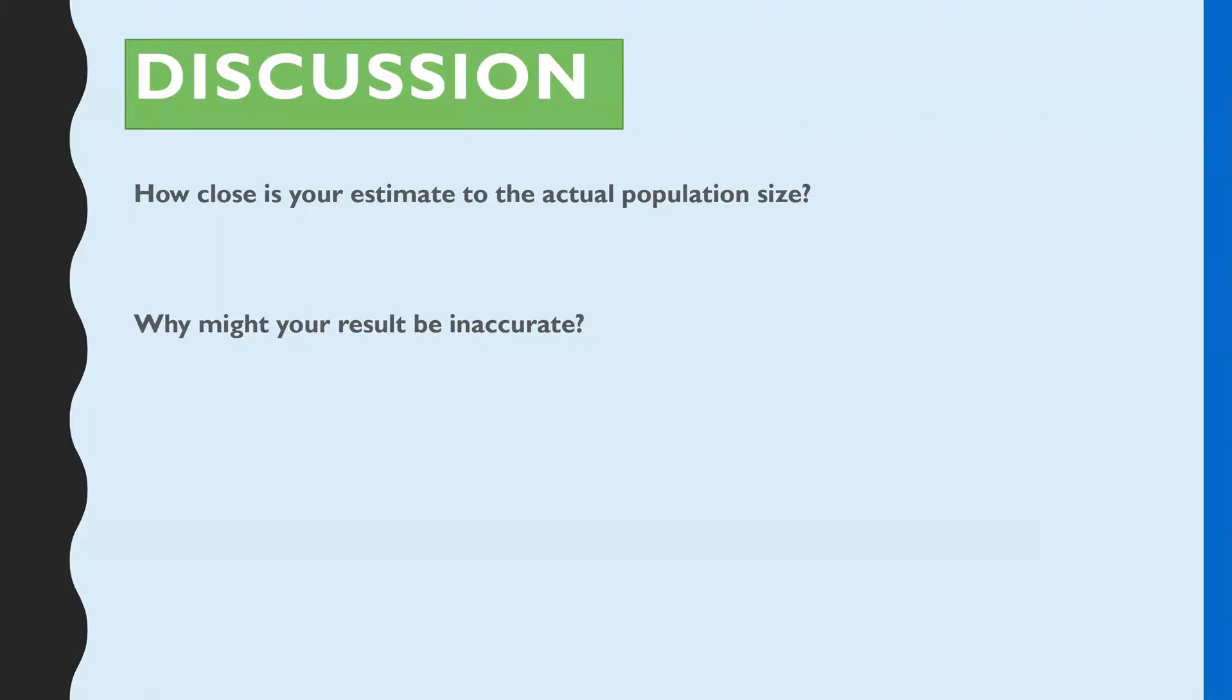So the estimate is 10 away from the actual number. So discussion points: you could get linked to this practical. Number one is what I've just gone through: how close was the estimate to the actual population size? Now I was able to calculate this because it wasn't a real animal population, the Skittles were a model. So I was 10 off, which was 5.6 percent. So it's not 100% accurate.